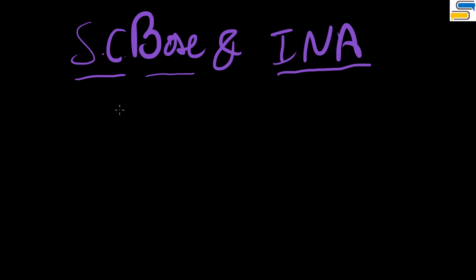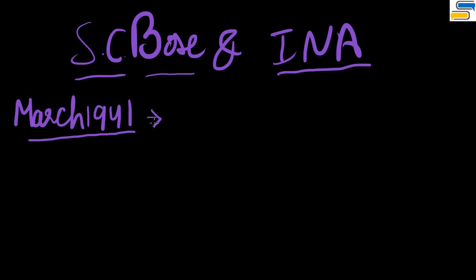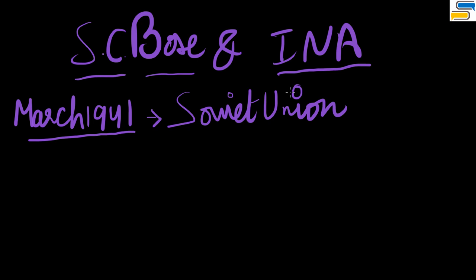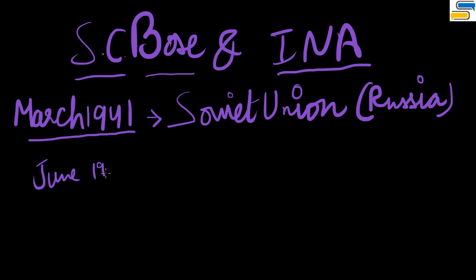The question of where Bose comes into the INA picture lies in this chronology. In March 1941, Bose went to the Soviet Union — he felt that nobody agreed with his methodology of getting freedom, so he would try to get freedom in his own way. Important exam note: do not write Russia — write Soviet Union or USSR, as it was called at that time.